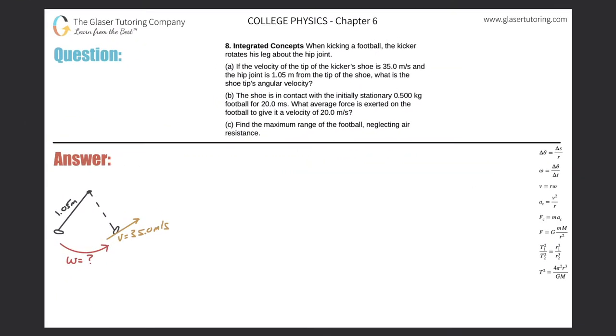Number eight, integrated concepts: When kicking a football, the kicker rotates his leg about the hip joint. Letter A: If the velocity of the tip of the kicker's shoe is 35 meters per second and the hip joint is 1.05 meters from the tip of the shoe, what is the shoe tip's angular velocity?